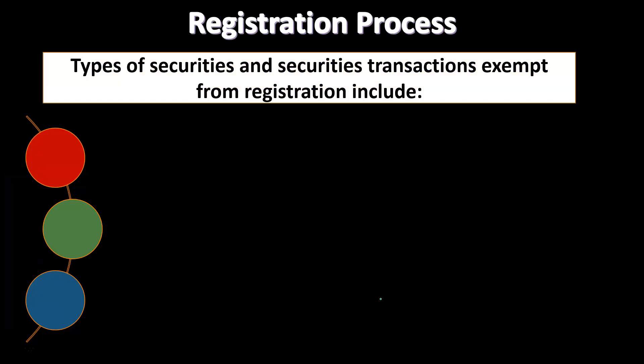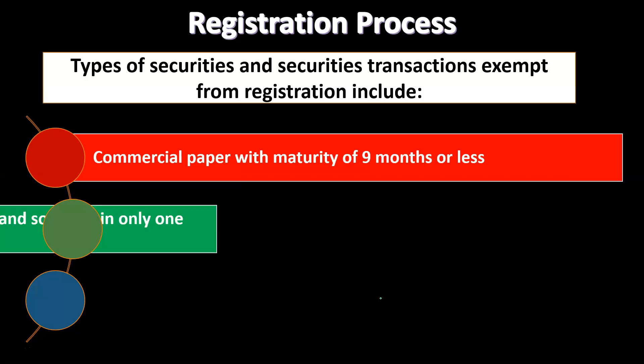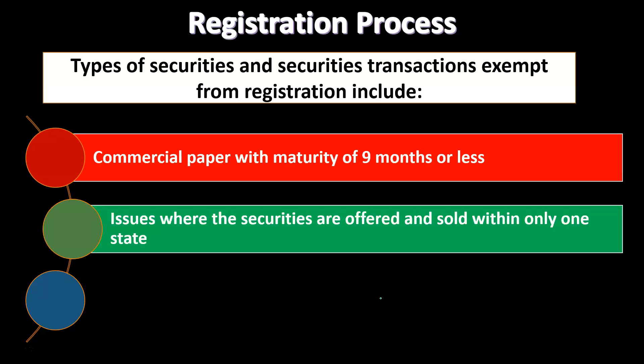Types of securities and securities transactions exempt from registration include commercial paper with maturity of nine months or less, and issues where the securities are offered and sold within only one state — removing basically the interstate element. The SEC, of course, is a federal type of regulation.